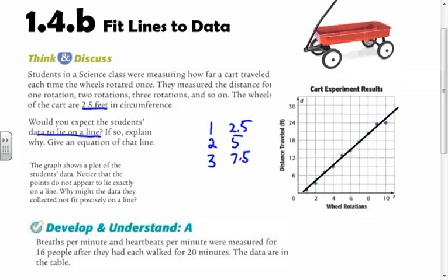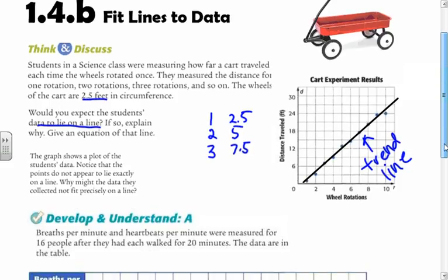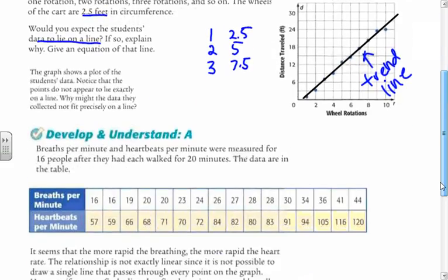And what we can attempt to do is try and make a line fit that data, and then we can actually use that line to make predictions about that data. That's called a trend line, when you just put in a line to represent the trend in the data. Now there's also some ways we can make that line actually fit better. We can use technology to come up with a better line than just eyeballing it. So we're going to look at a problem here.